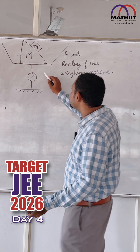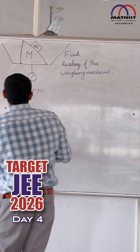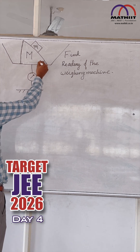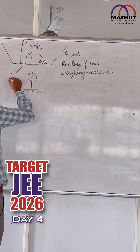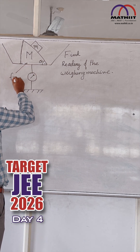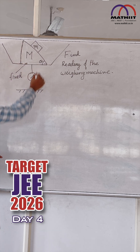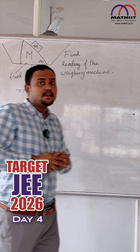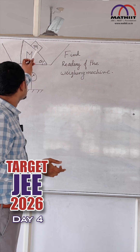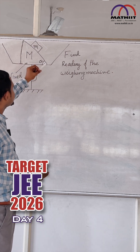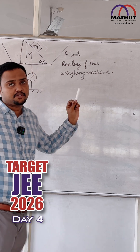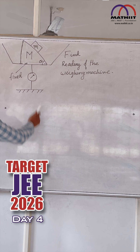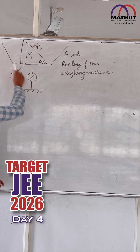There is an inclined plane like this. This angle is theta and the inclined plane is fixed. The inclined plane has mass capital M, and within the setup there is another mass small m. All surfaces are smooth. The question is: what is the reading of this weighing machine?